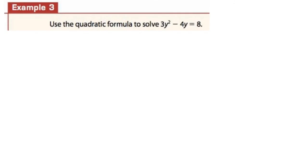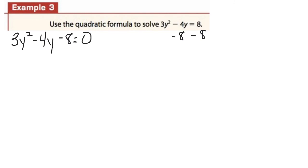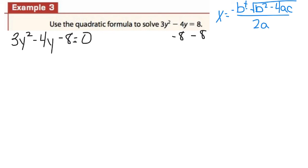Let's try one more. First, the equation has to be set equal to zero — it's not, so subtract 8 from both sides to get 3y squared minus 4y minus 8 equals zero. This doesn't look nice, so I'm not even going to try a chart with this — I'm going to use the quadratic formula. Here's my a: it's 3. Here's my b: it's negative 4. And here's my c: it's negative 8.